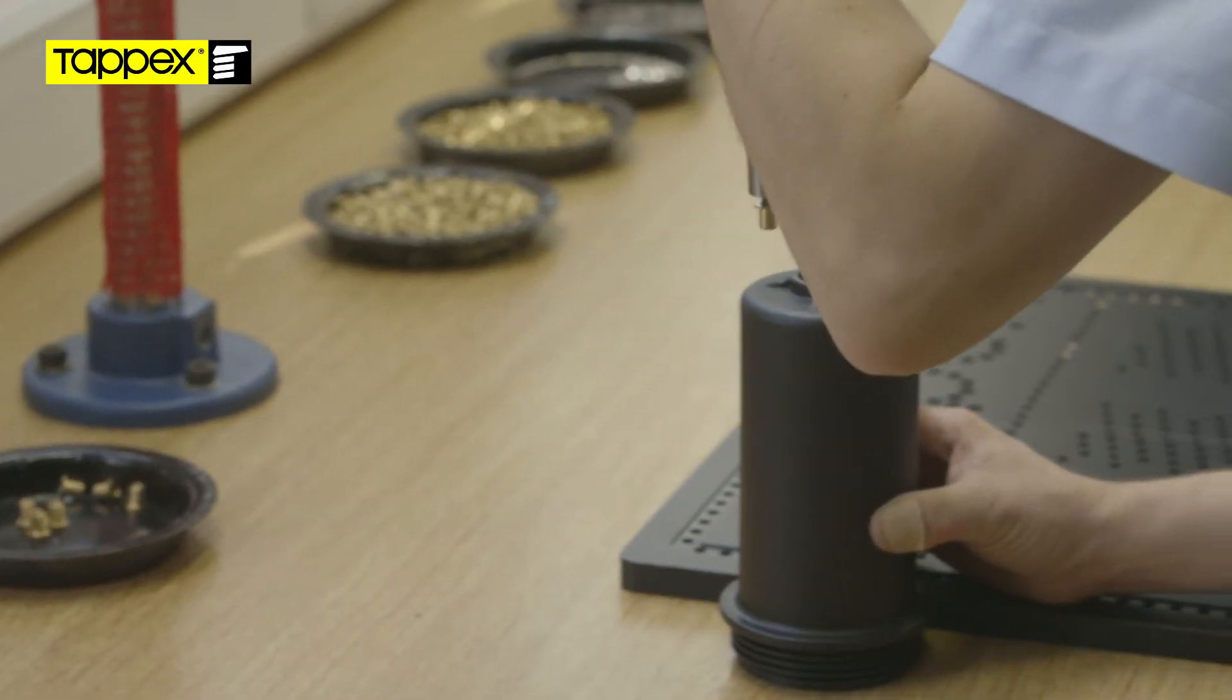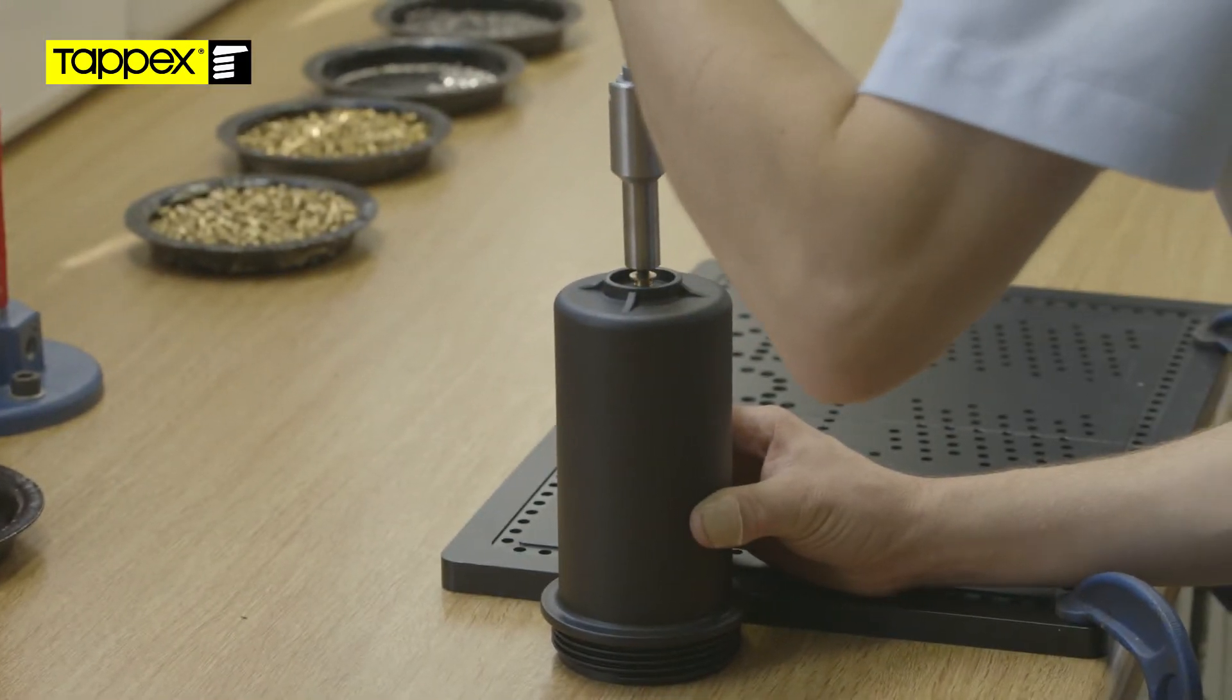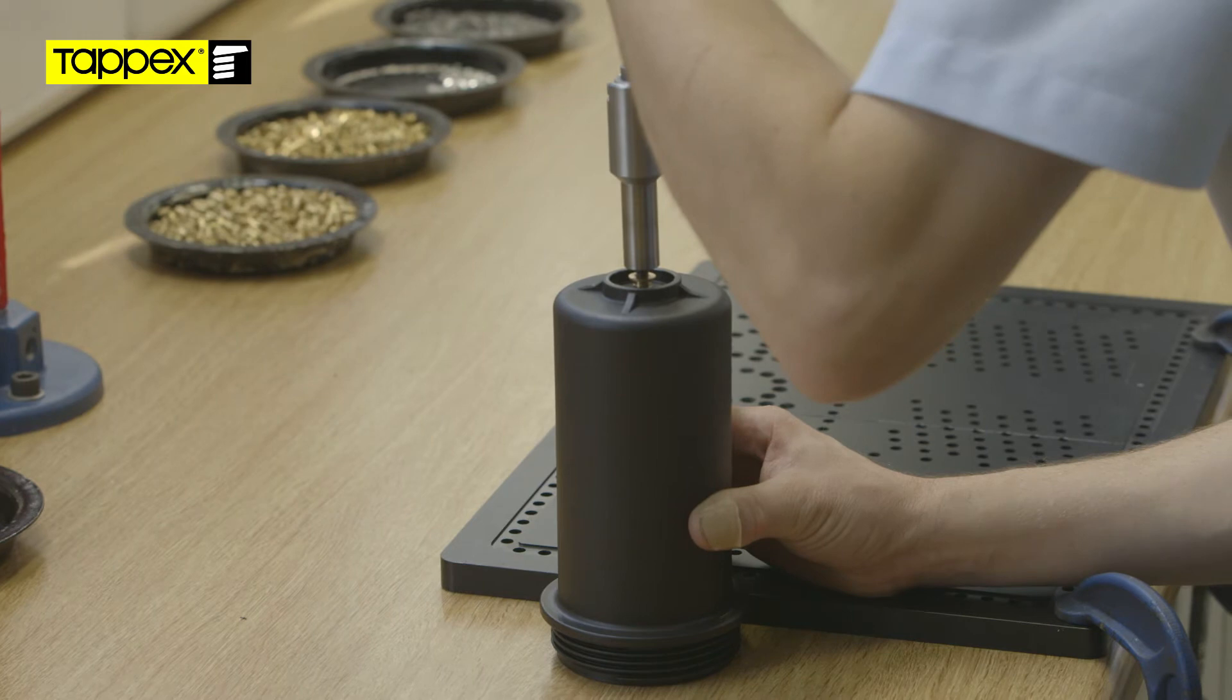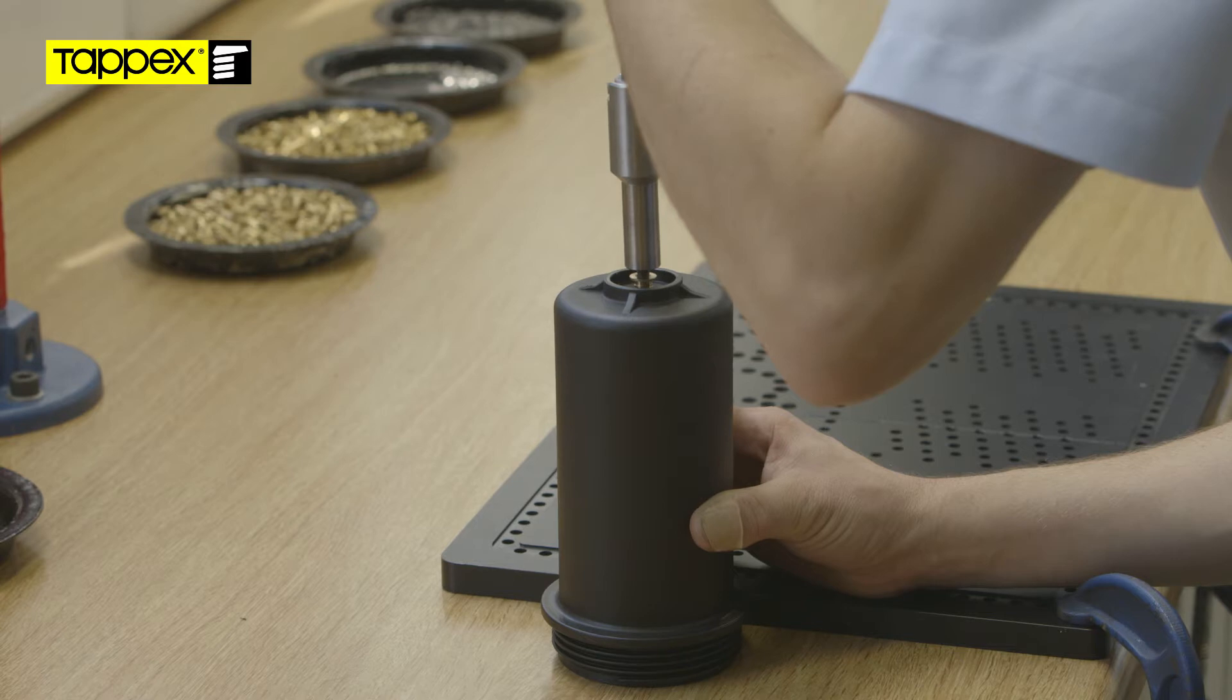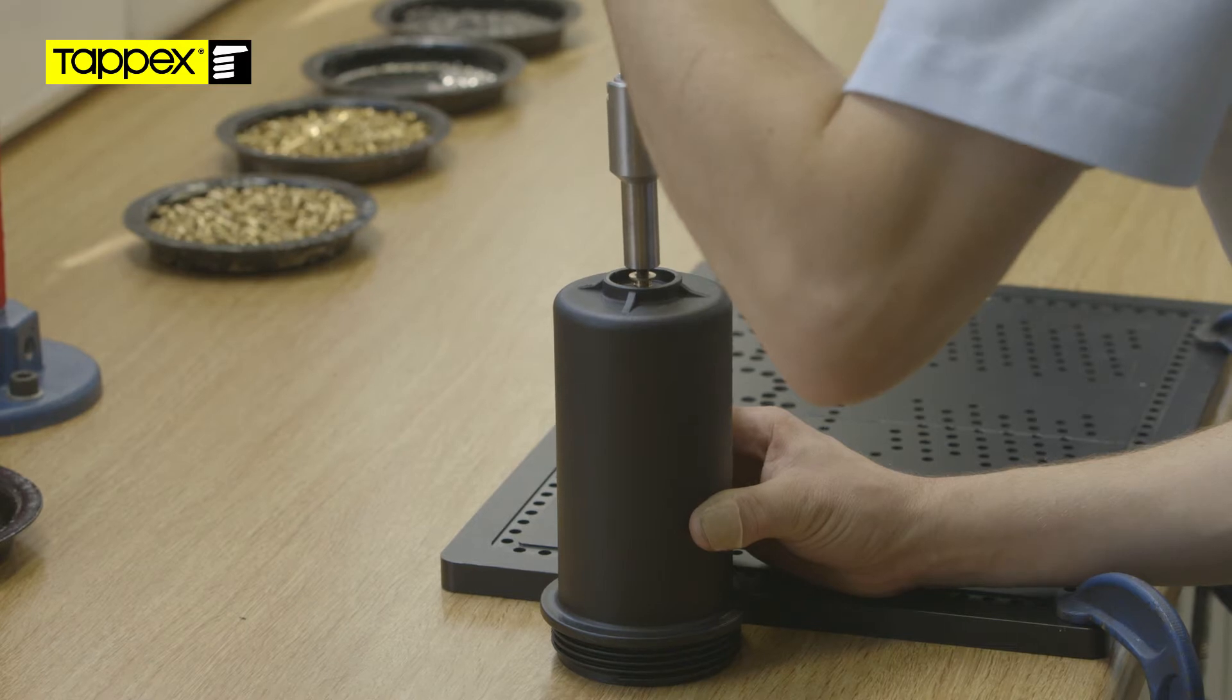Align the insert with the top of the hole and actuate the screwdriver. A correctly set flexiarm is designed to ensure the insert is square with the receiving hole. With a little downward pressure, the self-tapping insert will cut its way into the material until fully installed.